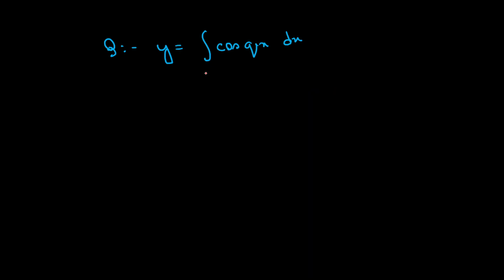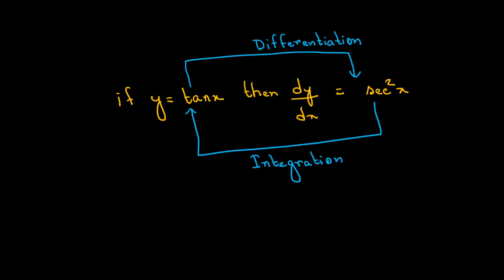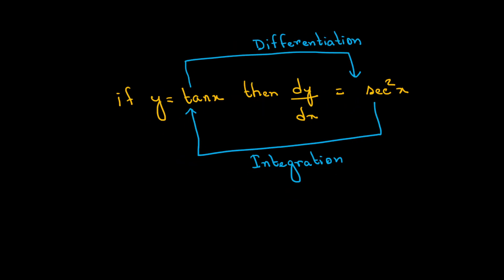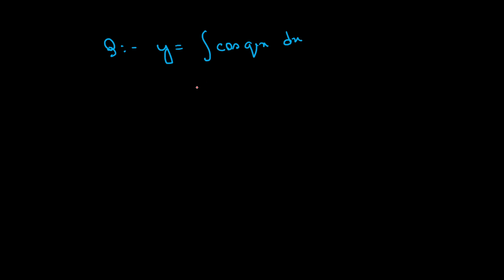Integration of cos(qx) dx. Integration of cos(x) is sin(x). So we can write: if we integrate cos(x), we get sin(qx) divided by the coefficient of x, which is q, plus c.